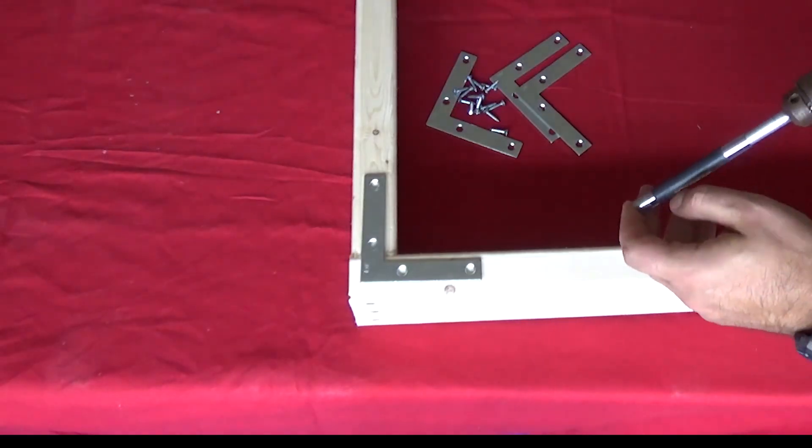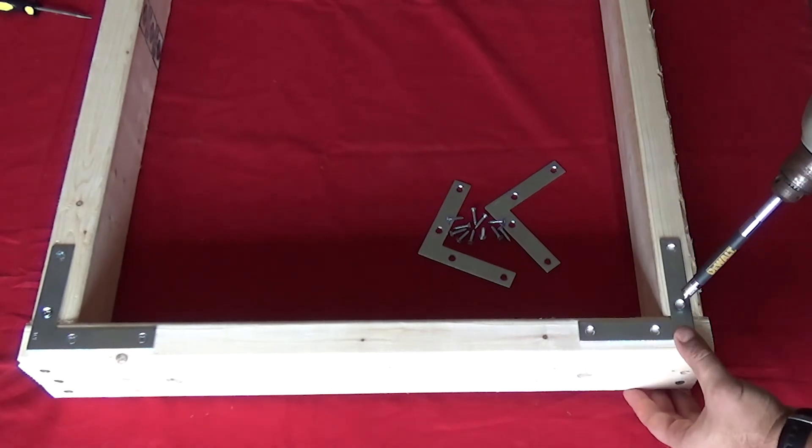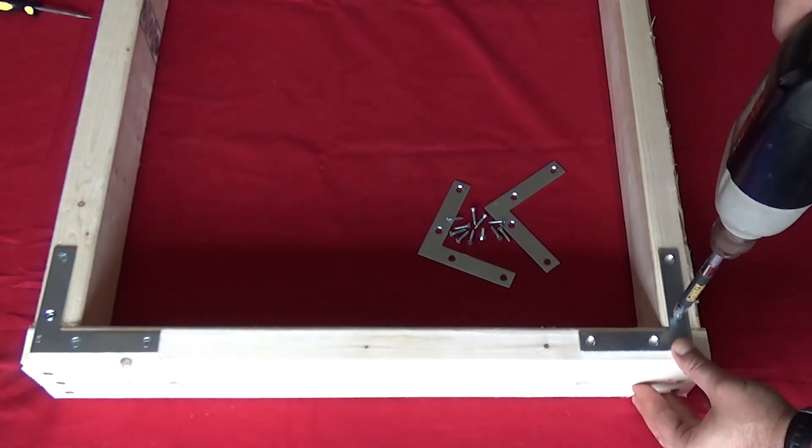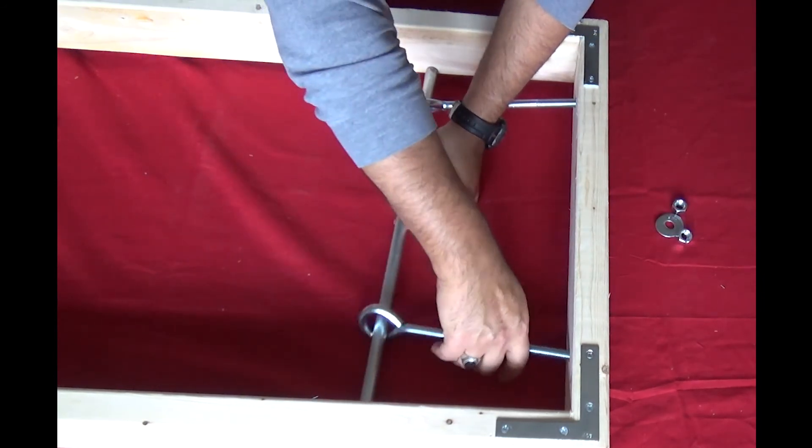Next we'll add these L brackets which will also add more stability and strength to the loom. We will use the shorter metal rod and attach the 2 eye bolts as shown.